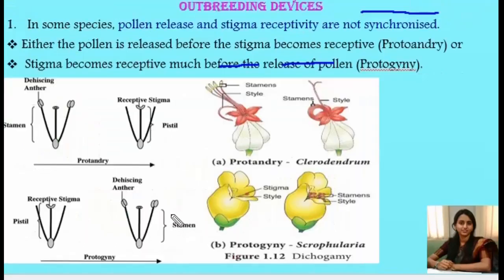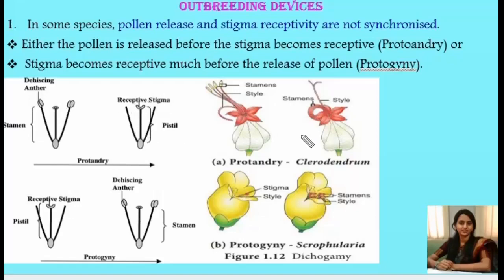The first outbreeding device is protandry and protogyny. In some species, pollen release and stigma receptivity are not synchronized. In protandry, pollen grains are released before the stigma becomes receptive. For example, in Clerodendron, the stamens mature and pollen grains are released, but the stigma only becomes receptive after dehiscence of the anther.